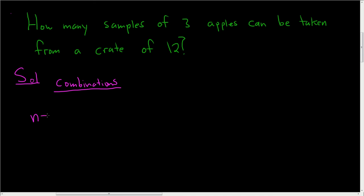Here n is equal to 12 because we have 12 apples and we want to choose three of them. So using the formula, 12 choose 3, that's equal to... and maybe before I go through this, let me write the formula down over here. n choose r is equal to n factorial divided by n minus r factorial r factorial. So that's the formula.